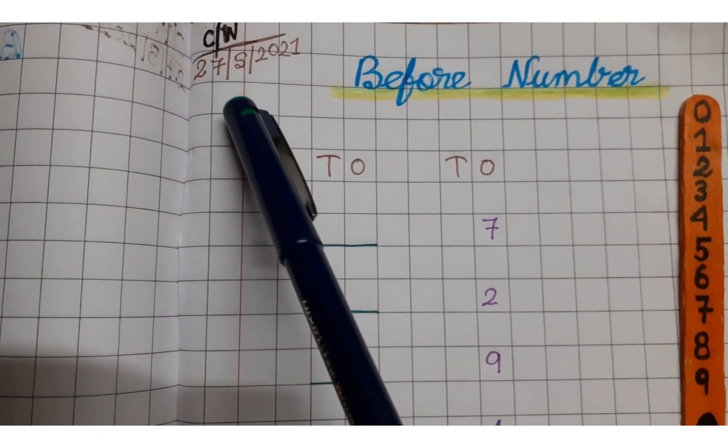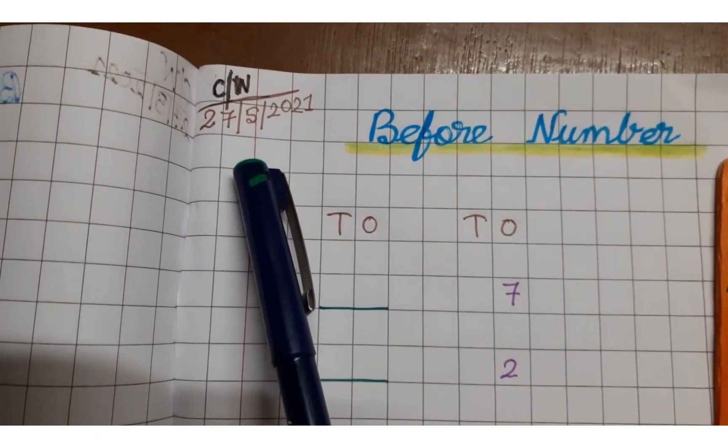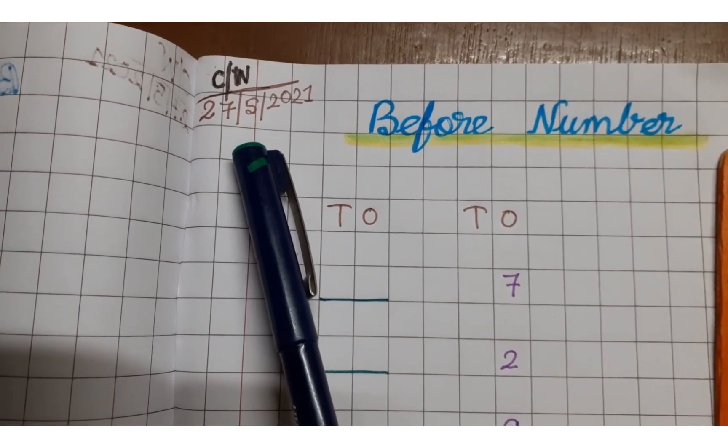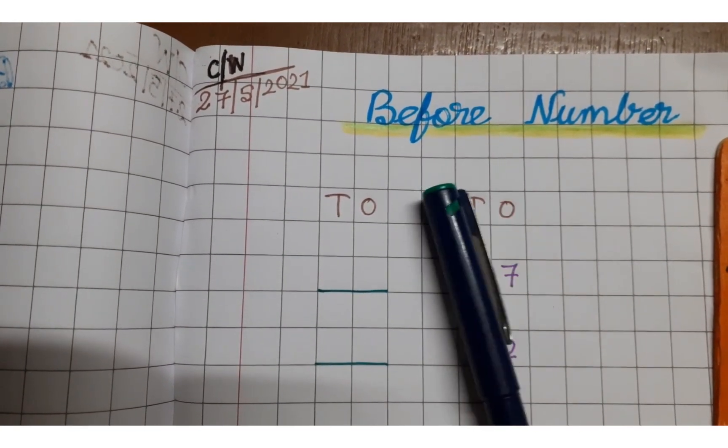First of all class write down CW date. CW date. After that, read the heading with me.